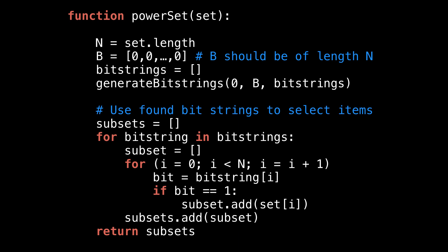But once that is done, we've generated all our bit strings, the only thing left to do is to create all our subsets. This is in fact, the easiest part.